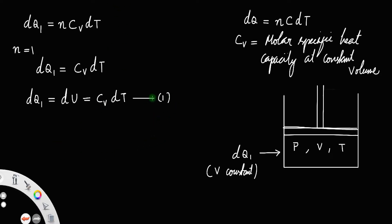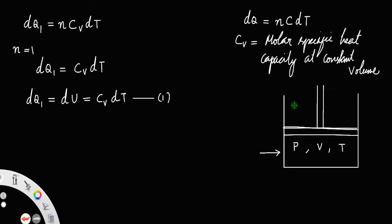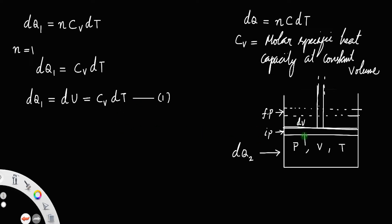Now, what if you supply another quantity of heat such that it moves the piston upward? Suppose a heat dq2 is supplied which increases the volume — the initial position of the piston is raised to a final position, so there is an increase in volume. The gas moves the piston upward, so work is done by the gas on the piston. The new heat supplied dq2 corresponds to a process where the volume is not constant, but we keep the pressure constant.